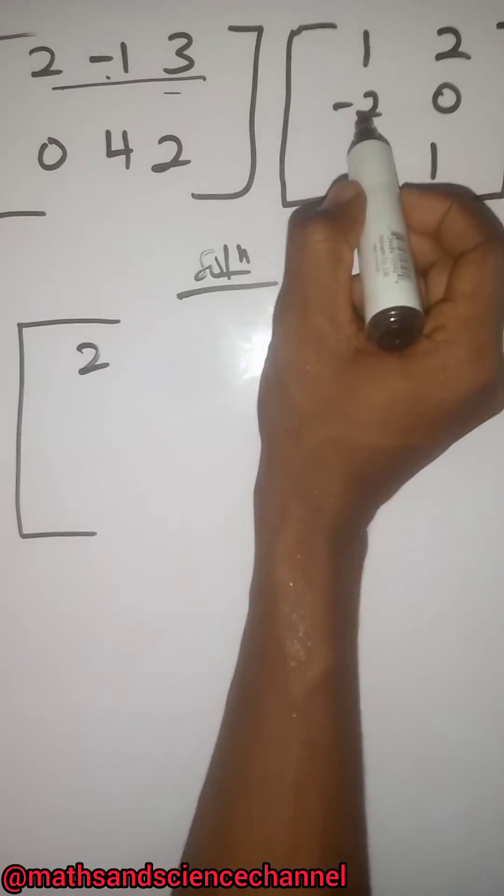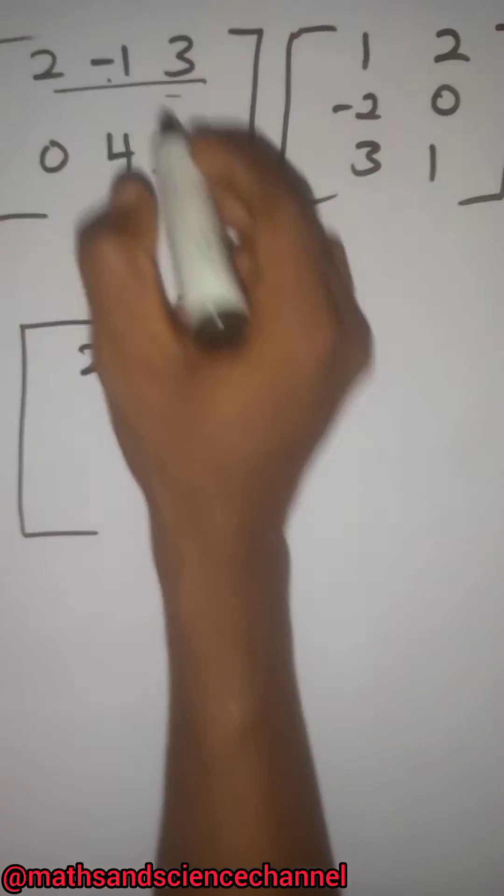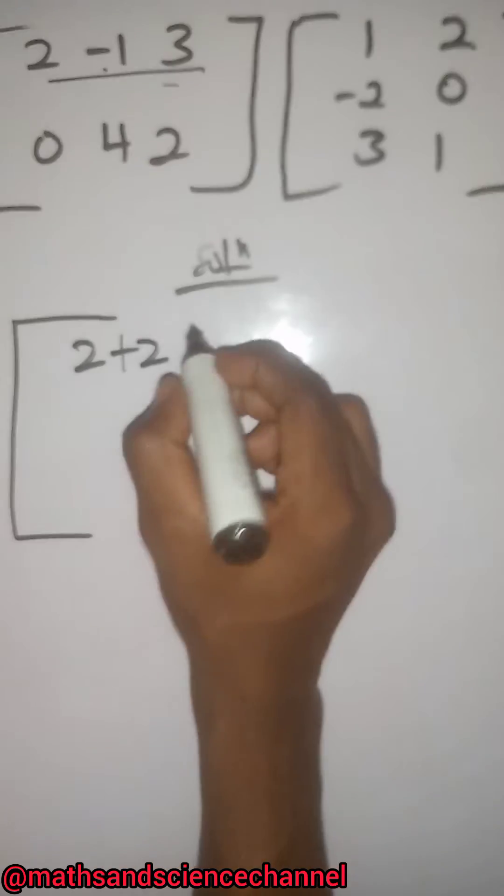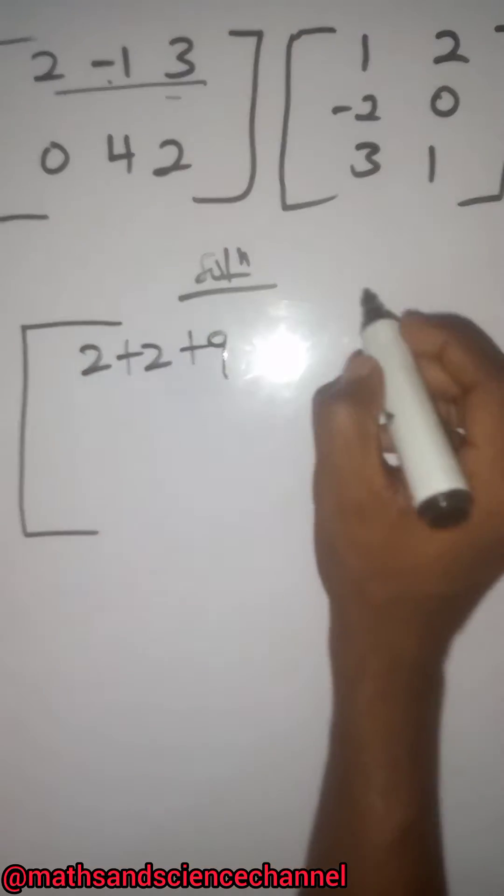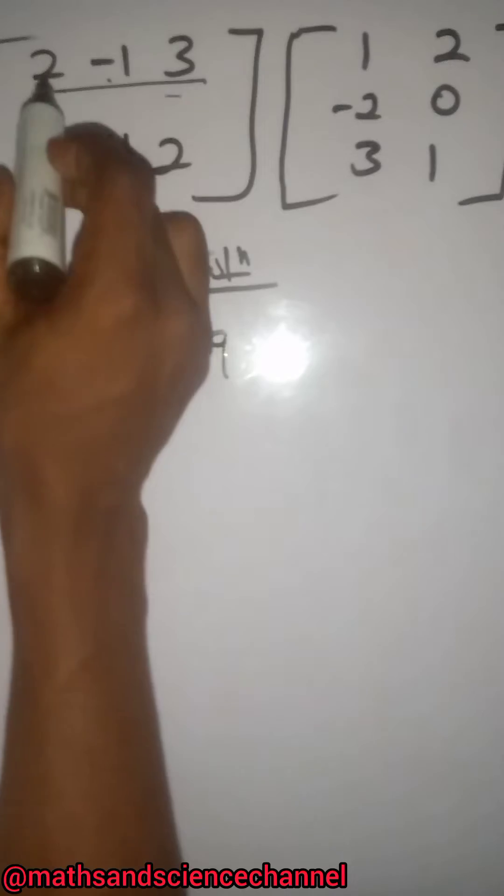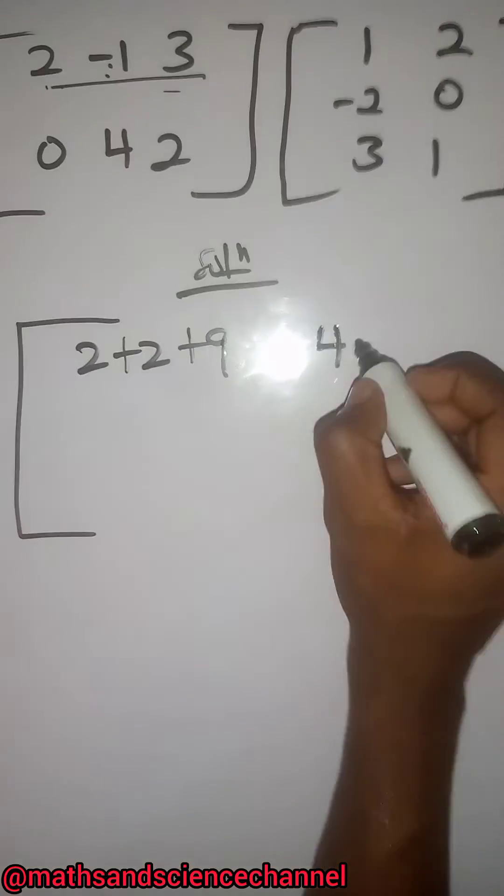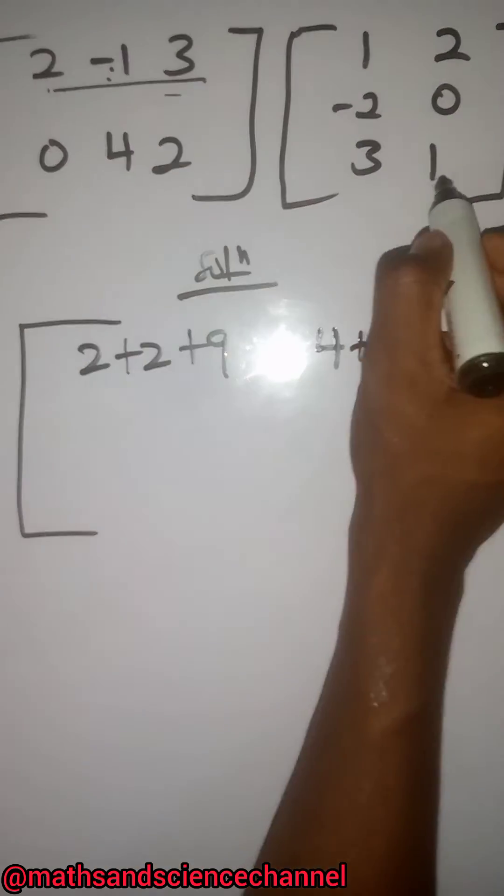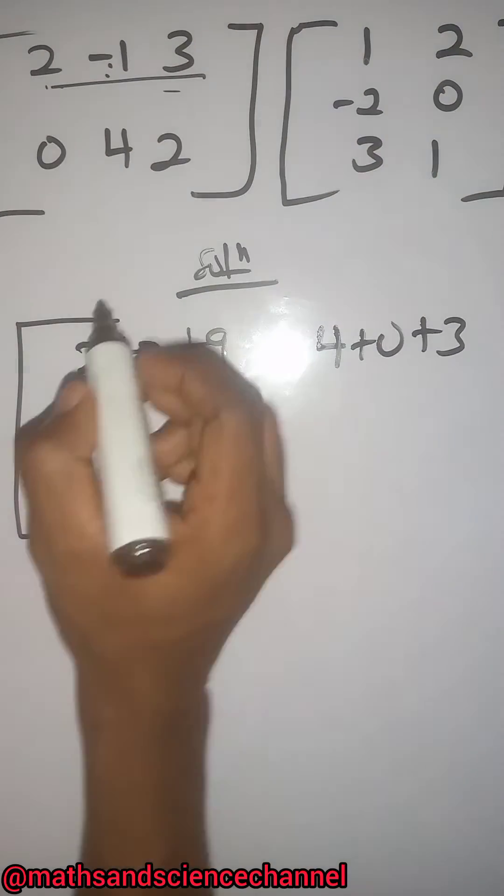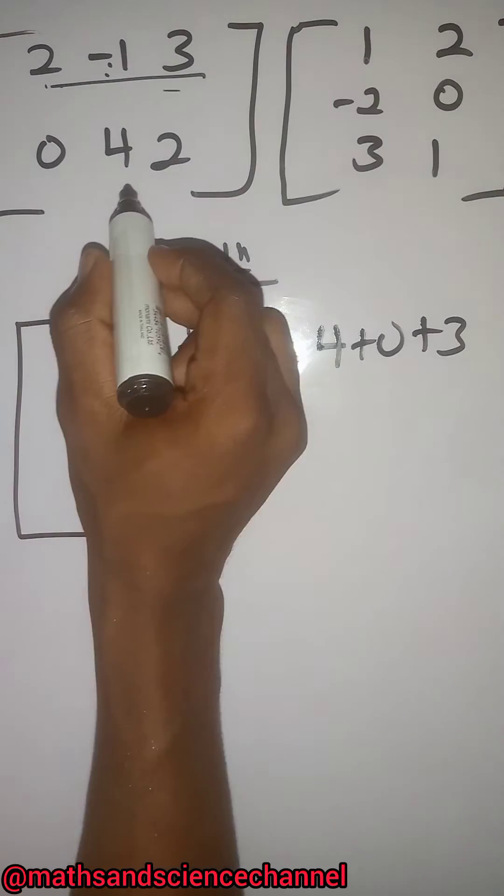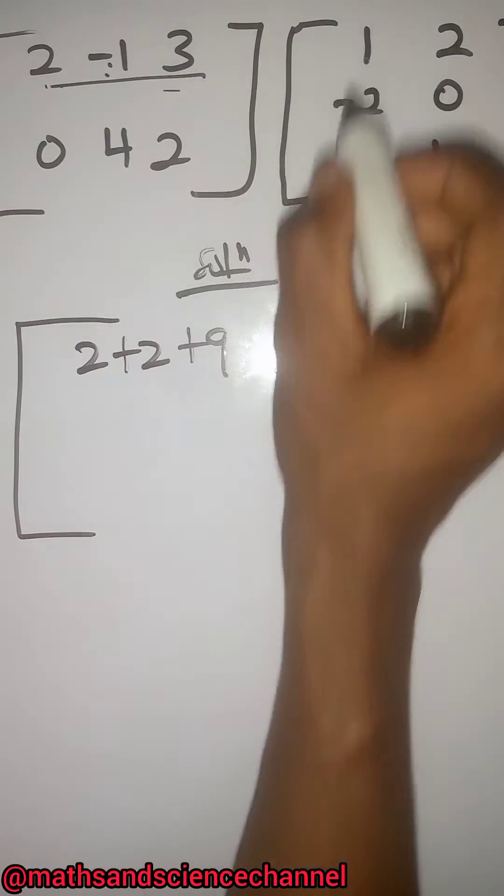Going on to the next one: 2 multiplied by 2 is 4, negative 1 multiplied by 0 is 0, 3 multiplied by 1 is just 3. Now going on to the second row multiplied by the column again.